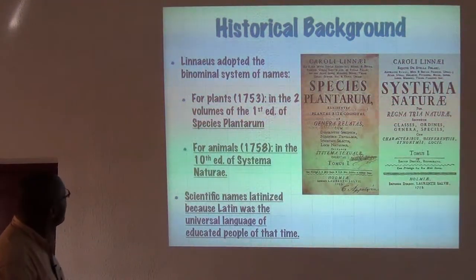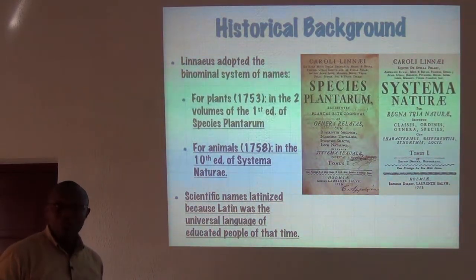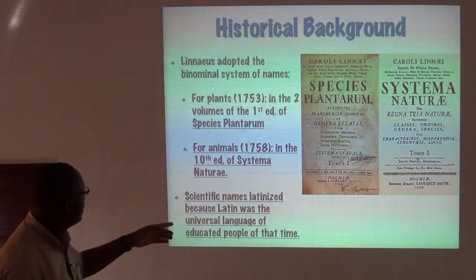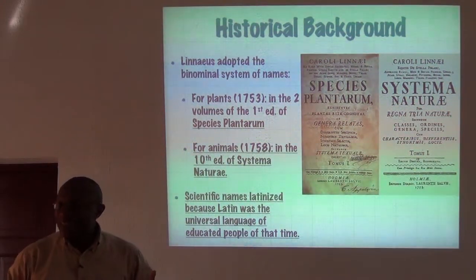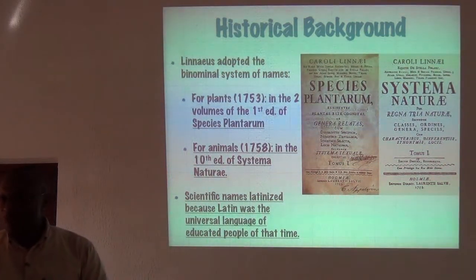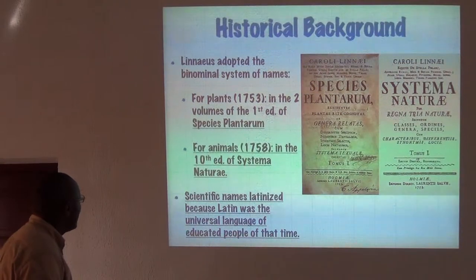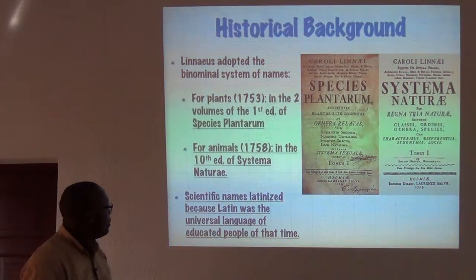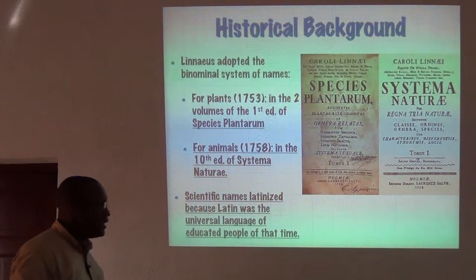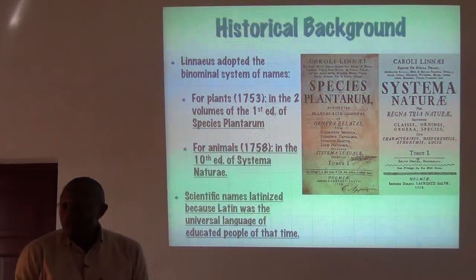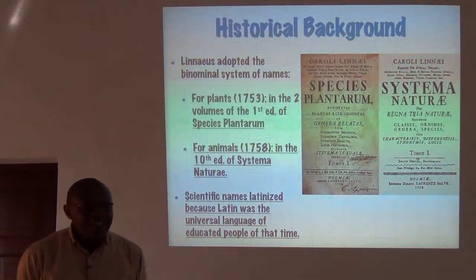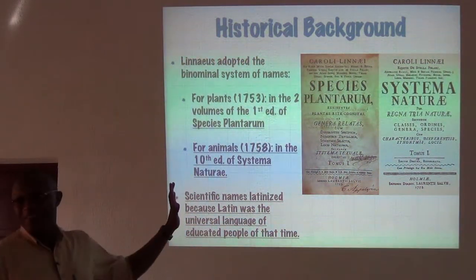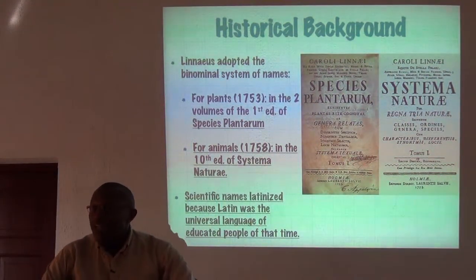Linnaeus adopted the binomial system in two steps. In 1753, in the two volumes of the first edition of Species Plantarum, he adopted the system for naming plants. Later, five years after, in the 10th edition of Systema Naturae, he also adopted the system for naming animals. Scientific names are basically Latinized because at the time of Linnaeus, Latin was the language of educated people. If Linnaeus were working today, he would probably adopt English, as that is the language in which everybody communicates.